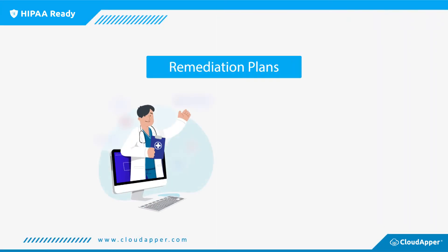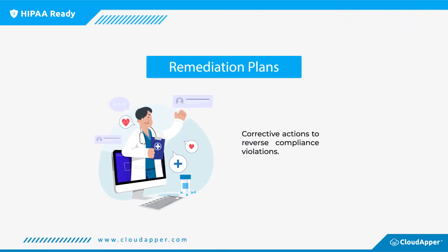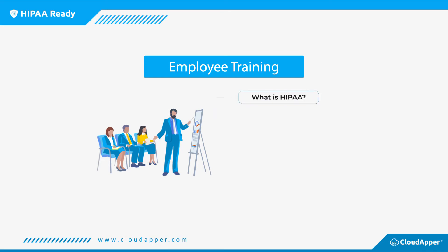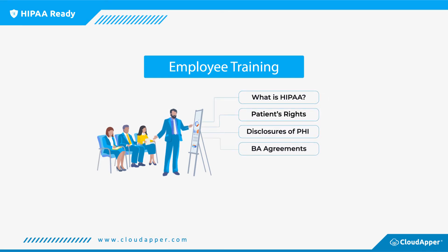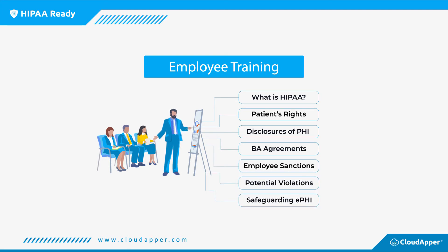The remediation plans provided by HIPAA consist of corrective actions to reverse compliance violations. When it comes to employee training, it is important that your employees know what exactly HIPAA is. It is also important that your employees understand the disclosures of PHI as well as BA agreements. Knowledge about employee sanctions, potential violations, and safeguarding PHI are essential for all of your employees.